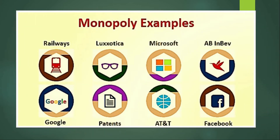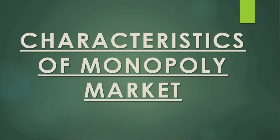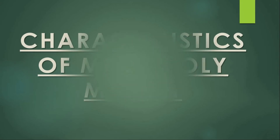Let us take a quick look at some examples of monopoly: Indian Railway, Google, AT&T, Facebook in social media, and Microsoft. Now, a monopoly market has the following characteristics.